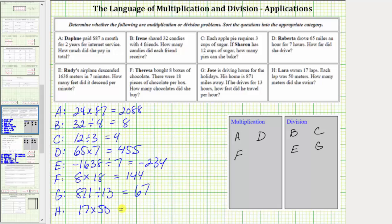17 times 50 equals 850. She swam a total distance of 850 meters. We perform multiplication to solve the problem. We place H in the multiplication box. I hope you found this helpful.